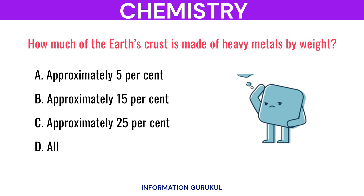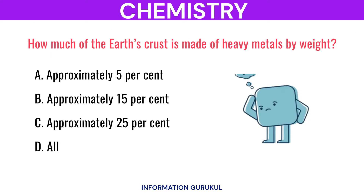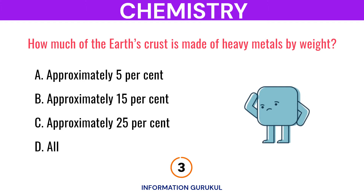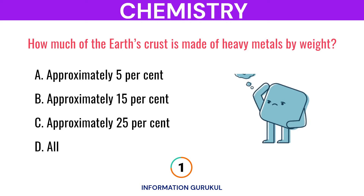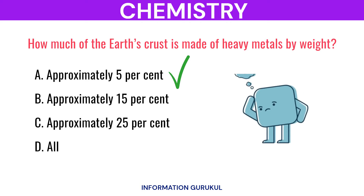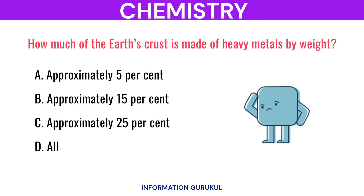How much of the Earth's crust is made of heavy metals by weight? Approximately 5%.